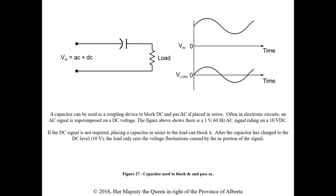A capacitor can be used as a coupling device to block DC and pass AC when placed in series. Often in electronic circuits, an AC signal is superimposed on a DC voltage — for example, a 1 V 60 Hz AC signal riding on 10 V DC. After the capacitor charges to the DC level, the load only sees the fluctuation caused by the AC portion. The capacitor blocks the DC by charging to that level, while the AC passes because it's constantly switching polarity. This is exactly what happens in the coupling mode on our scope.